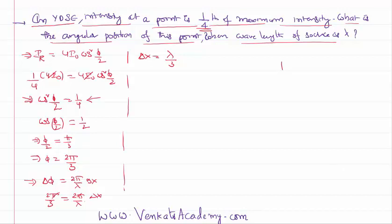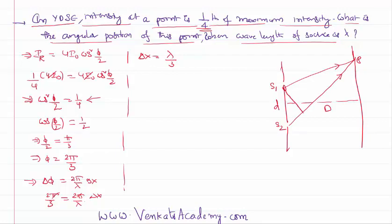If you remember the diagram of Young's double slit experiment, this is slit 1, this is slit 2. The distance between the two slits is small d. This is the screen at a perpendicular distance of capital D. At a point P, there is a path difference between them. To get the path difference I shall draw a perpendicular line. If this is an angle theta, this angle is also theta.